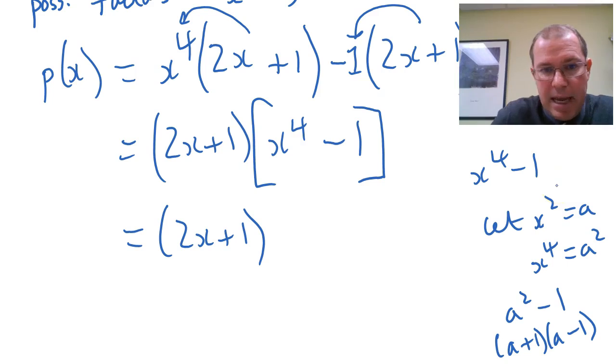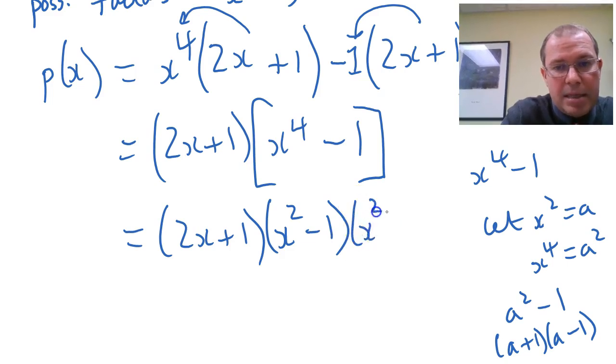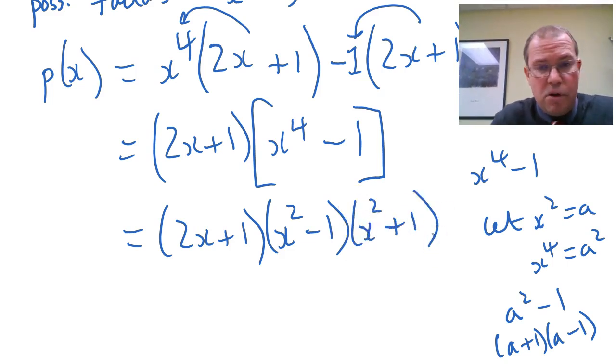So this factors to a plus 1 times a minus 1. But of course, x squared is a, so some of you may have spotted that already, that you can write x squared minus 1 and x squared plus 1. So x to the 4 minus 1 is a quadratic in disguise. You don't have to use the factor theorem there either.